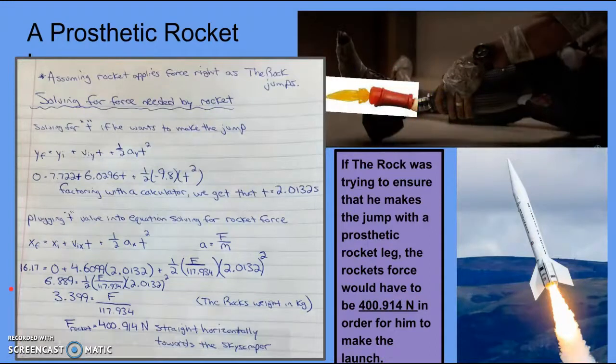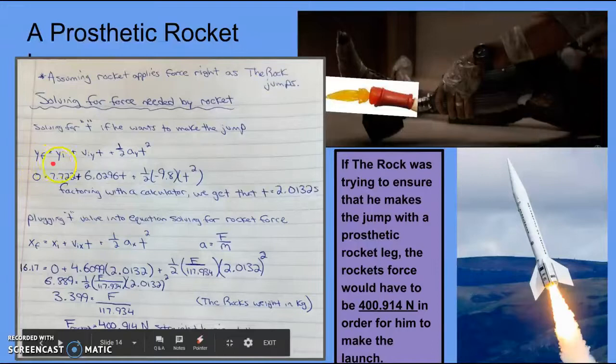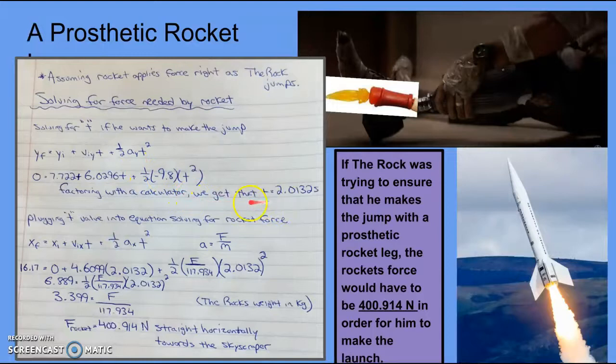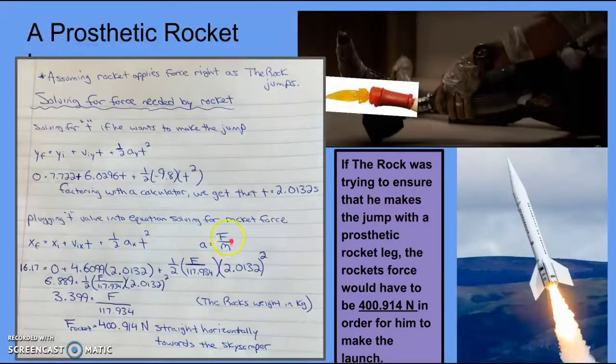Taking a look at one of our possible alternative situations, where The Rock's prosthetic leg is replaced with a rocket, we use the following equation. Using the equation for position given in our kinematics lesson this semester, we solved for time plugging in our known variables of y position, y velocity, time, acceleration, and time again. And we found our time to be 2.0132 seconds, theoretically, for this to occur. Using the same equation, but for x components, this time we solved for acceleration in our F equals MA equation. So, acceleration equals force over mass.